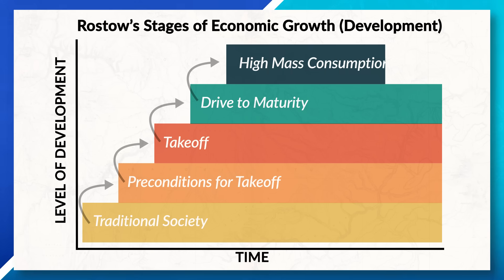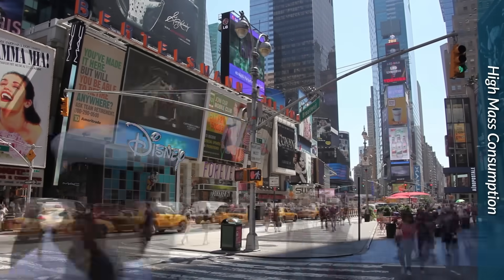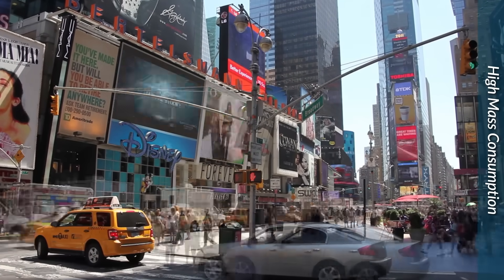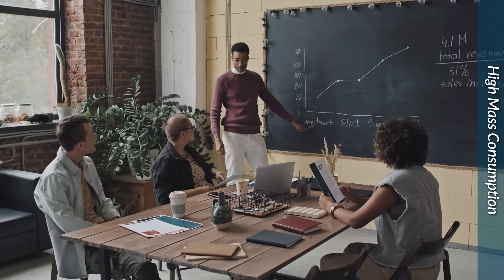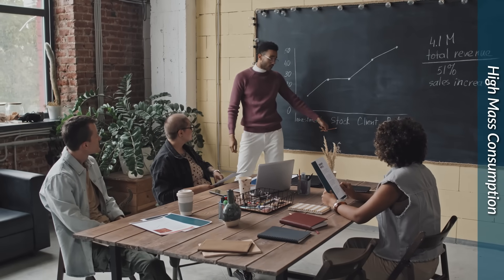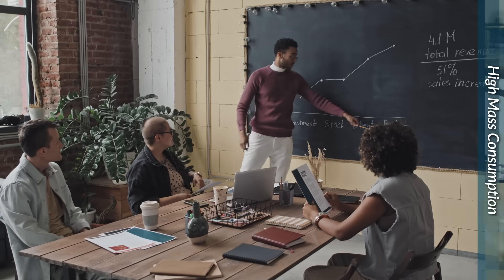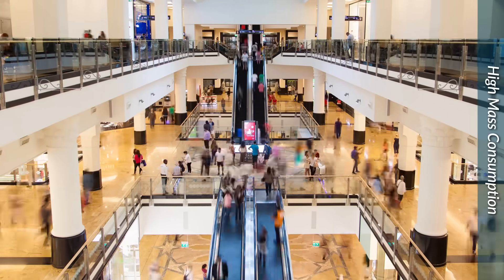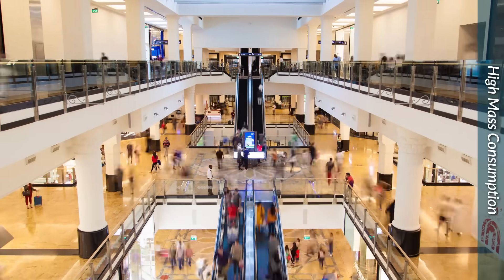Lastly, there is the high mass consumption stage. Here, the economy becomes fully developed, with society now producing products that not only meet society's basic needs but their wants as well. During this stage, the majority of jobs have shifted into the tertiary sector of the economy, with the state now being fairly independent from outside influences. States in this stage also often develop a consumer culture, as the economy becomes centered around consumption instead of manufacturing.